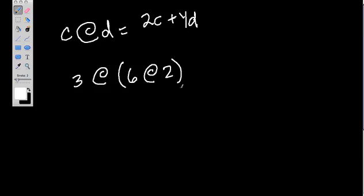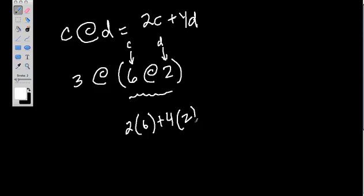So remember, the order of operations is what we're using and following. So we start with 6 squiggle 2 right here. Our rule is, think of this first number here as C and this one is D. So it's C squiggle D. It'll always be C squiggle D. Is take 2 times C, or 6, plus 4 times D, or 2. And we get 12 plus 8, which is 20.